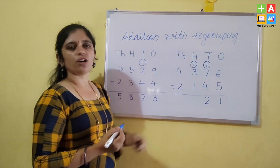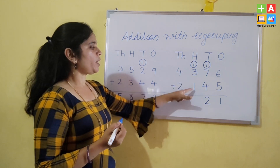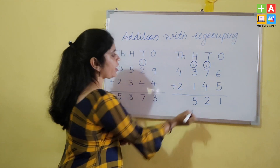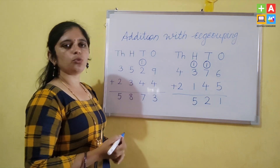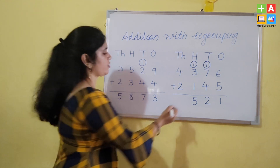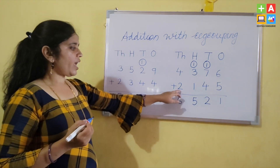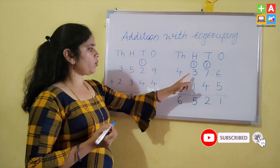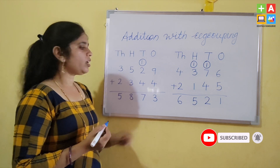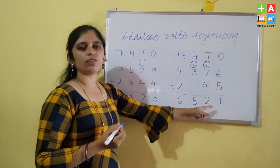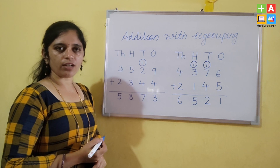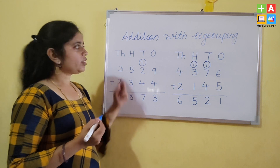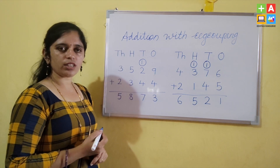Now 3 plus 1 is 4, and 4 plus 1 is 5. At the 1000th place, 4 plus 2 equals 6. So when we add 2,145 to 4,376 we get the answer 6,521. This is how we add 4-digit numbers, and this is addition with regrouping of 4-digit numbers.